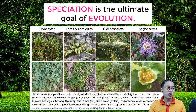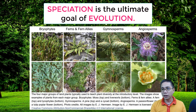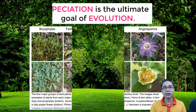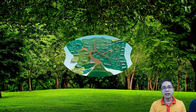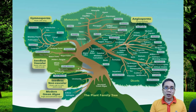That's why speciation is the ultimate goal of evolution. So, after a period of time, as you continue the so-called descent with modification, it is likely that another species can spring from your lineages. This can be very useful in the grouping of organisms.